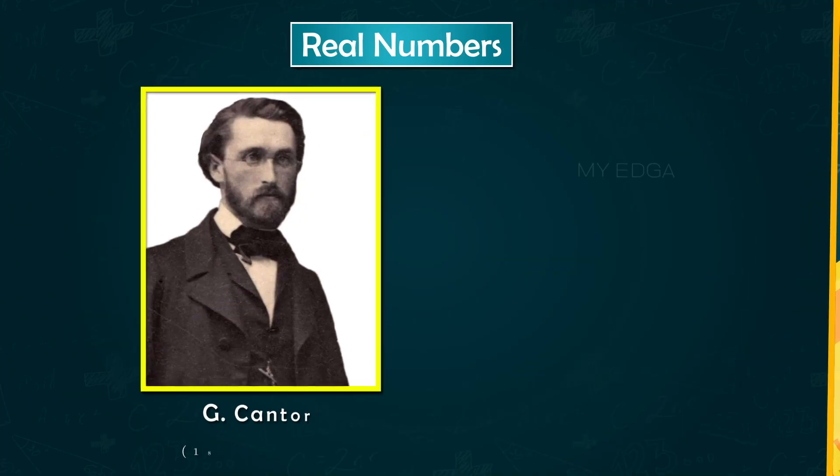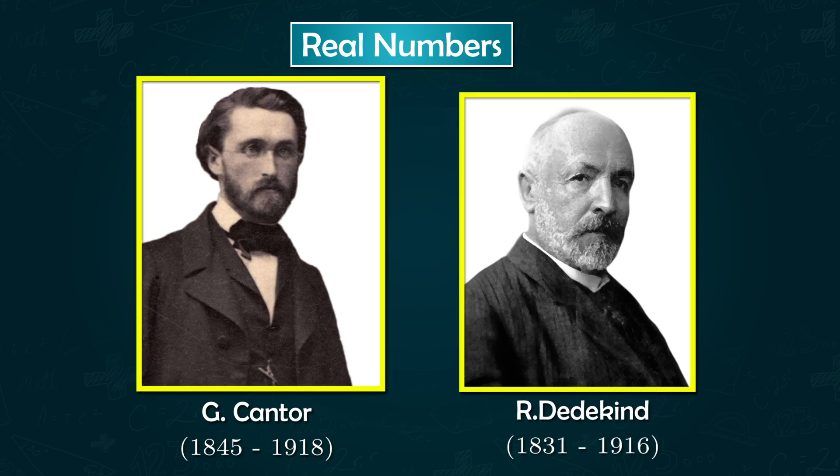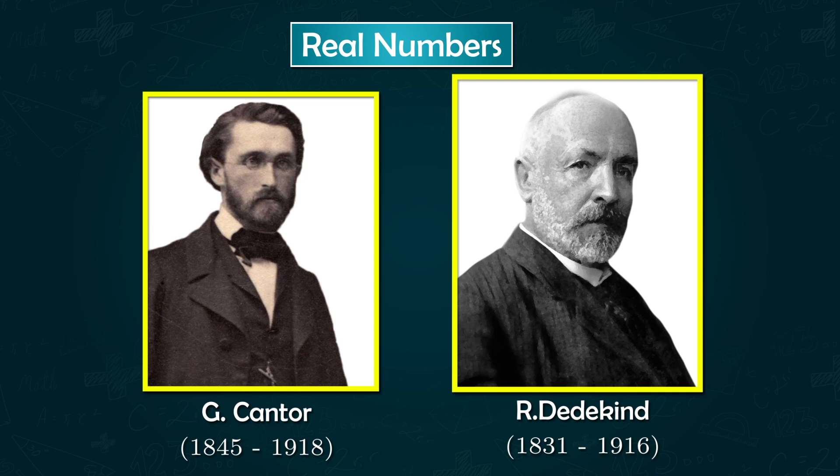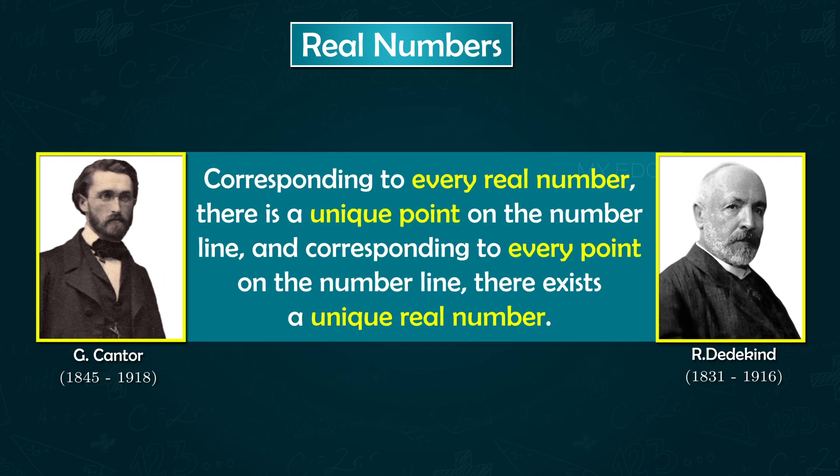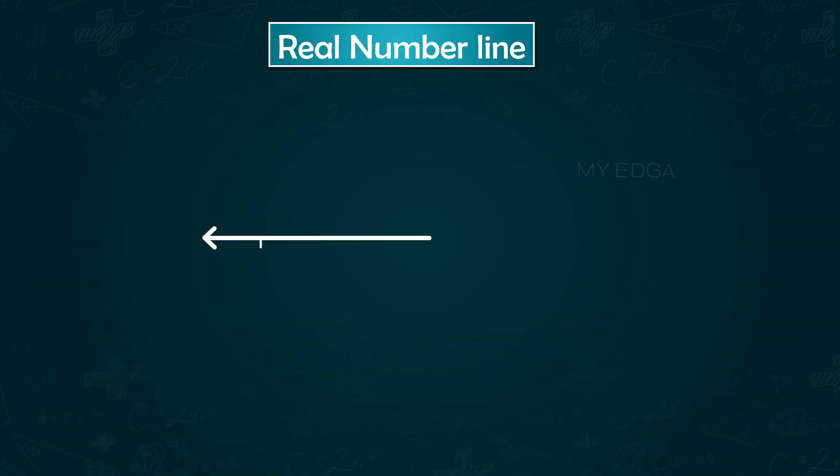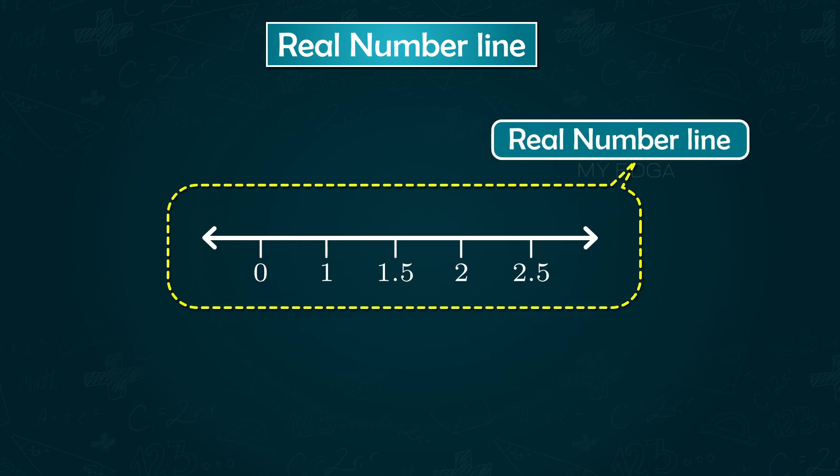In the 1980s, two German mathematicians Cantor and Dedekind showed that corresponding to every real number there is a unique point on the number line, and corresponding to every point on the number line there exists a unique real number. This is why we call the number line as the real number line.